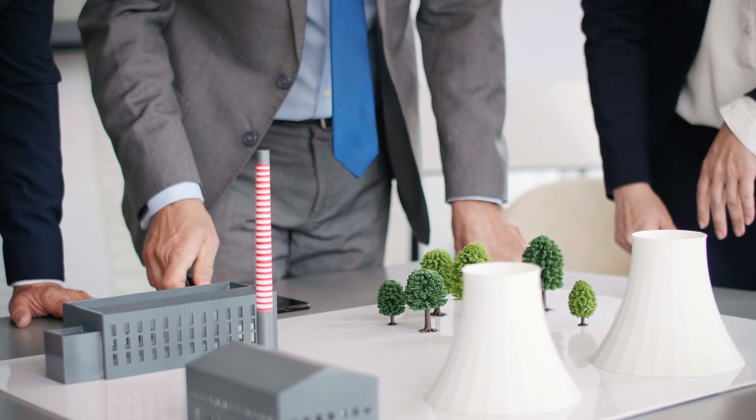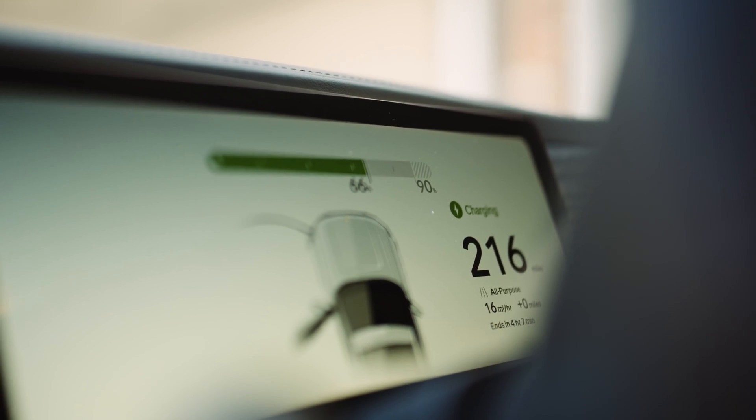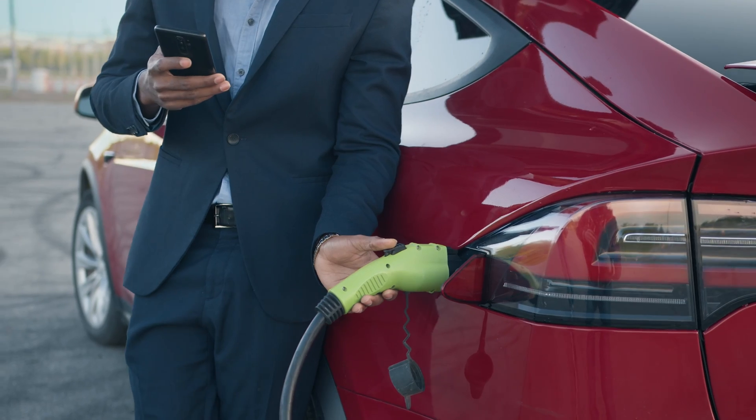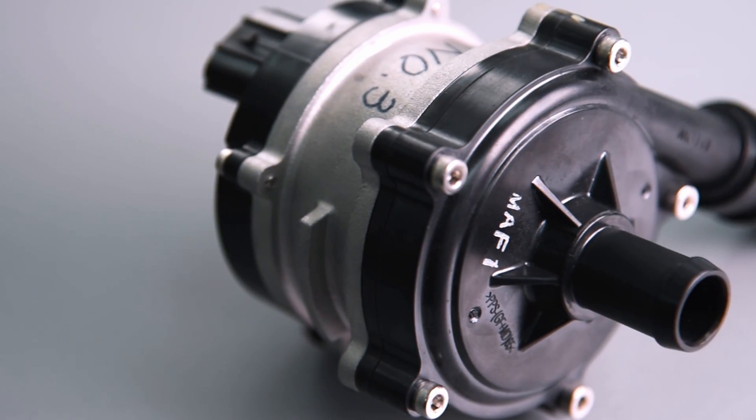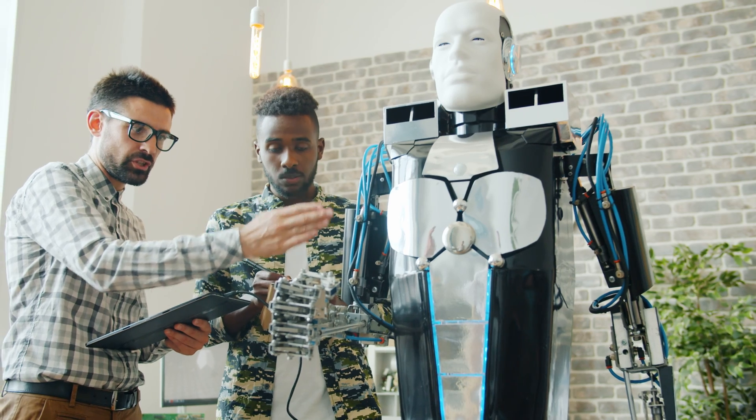If current government targets hold, most new cars sold in Europe will be electric. Most power will come from renewable sources. And energy-efficient motors will be indispensable in water circulation pumps of green buildings and humanoid robots.